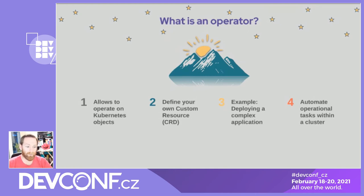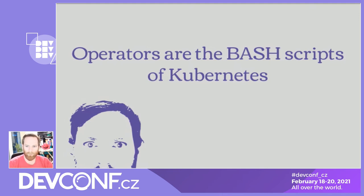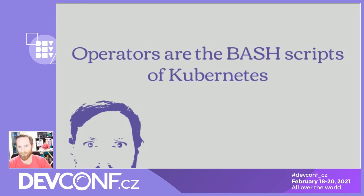If you hadn't done all that manually before, probably you had a bash script to do that. And that brings me to this statement: operators are the bash scripts of Kubernetes. That's what it seems — it's just the cool version of bash scripts, automating now with Go code or something like that.